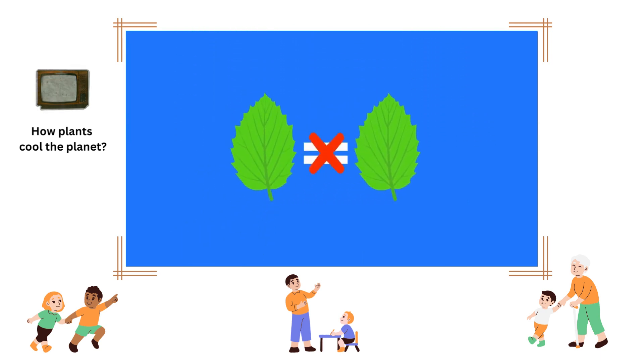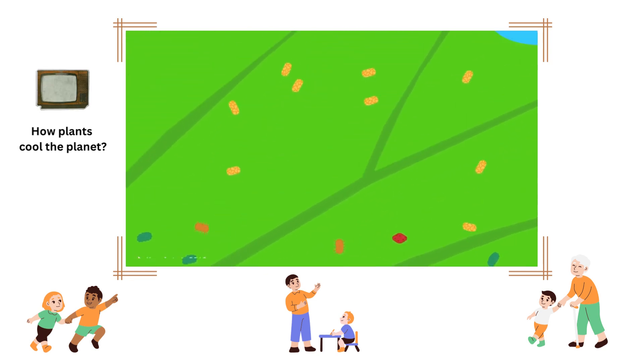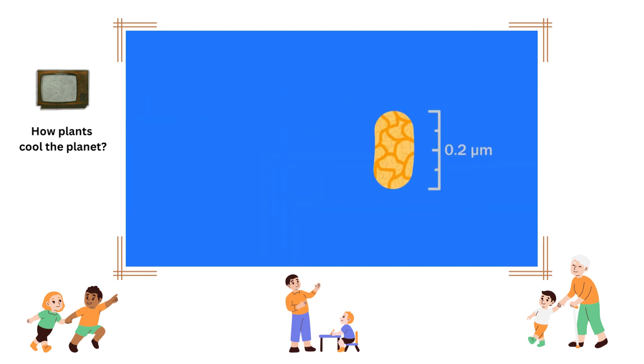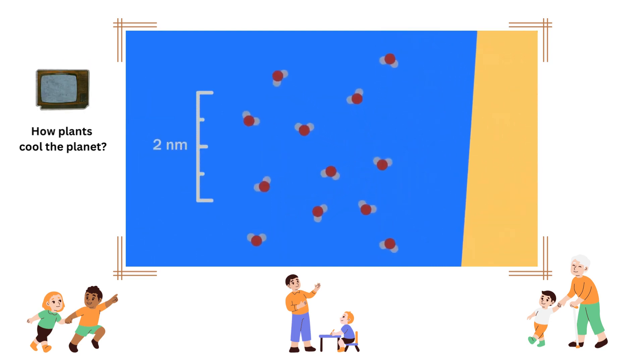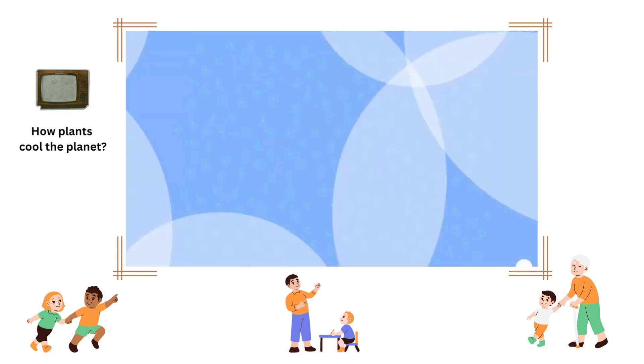Leaves aren't just leaves. They're home to many species of bacteria, some of which are light enough to rise high up into the atmosphere along with the transpired water vapor. These bacteria are small, but much larger than the water vapor particles. So the gaseous water vapor uses the surface of the bacteria to condense into liquid droplets, creating clouds much more quickly.